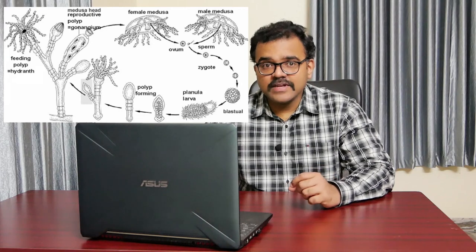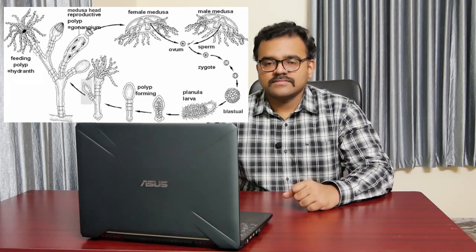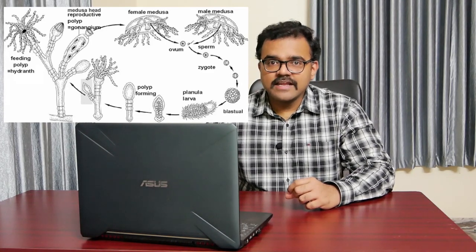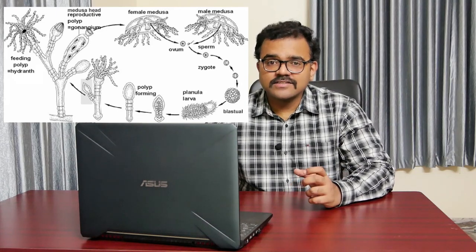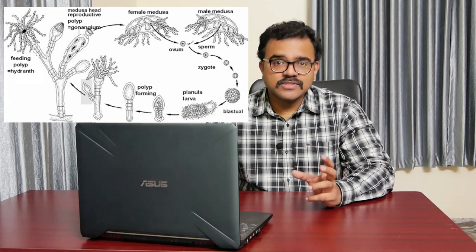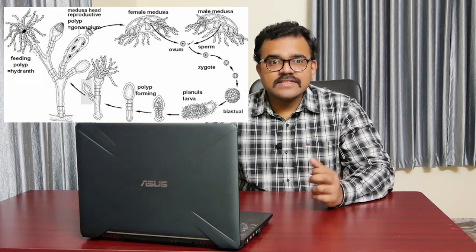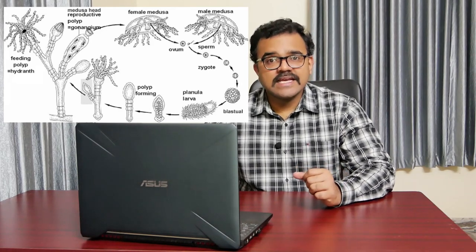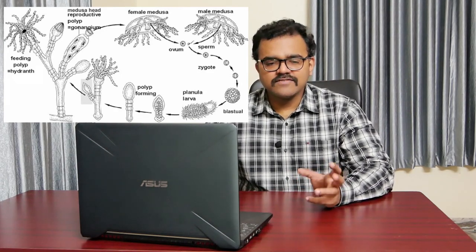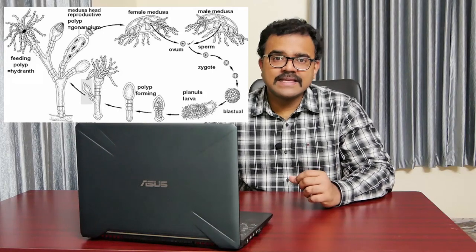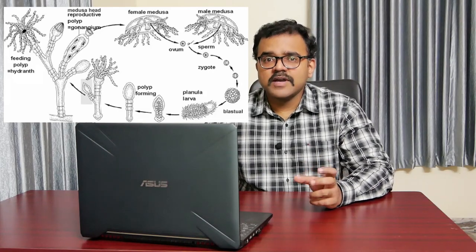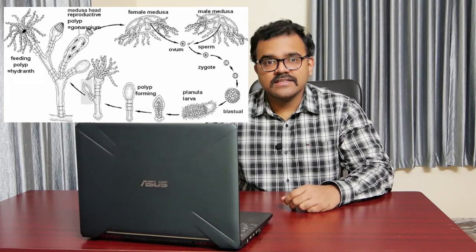Finally, a larval form called the planula larva emerges. The free-swimming planula larva has an elongated and ovoid appearance; the anterior end is broader than the posterior end. The outer surface of the larva is composed of ciliated ectodermal cells and the inner layer is the endodermal. Mouth is absent in this larva. After a brief period of free-swimming existence, the planula larva settles down and fixes itself to the substratum by one pole, then transforms into the next stage — the hydra stage.